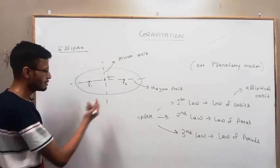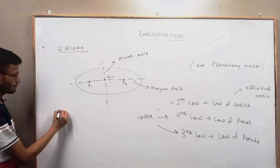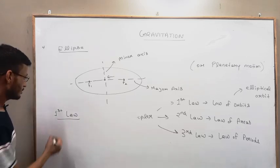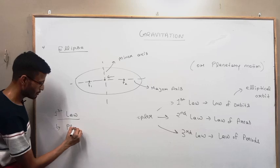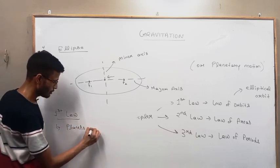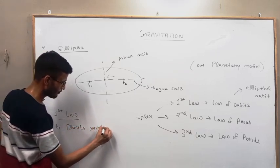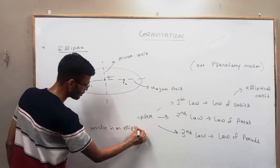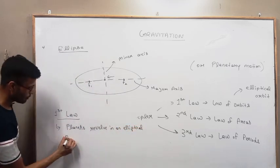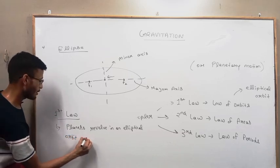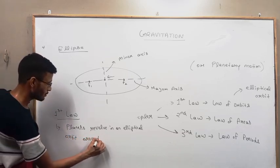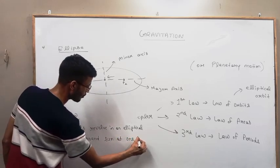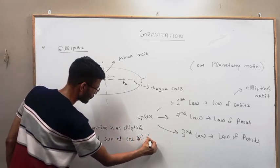Now let's discuss the first law. First I am going to write the statement: planets revolve in an elliptical orbit around the sun at one of the focus.